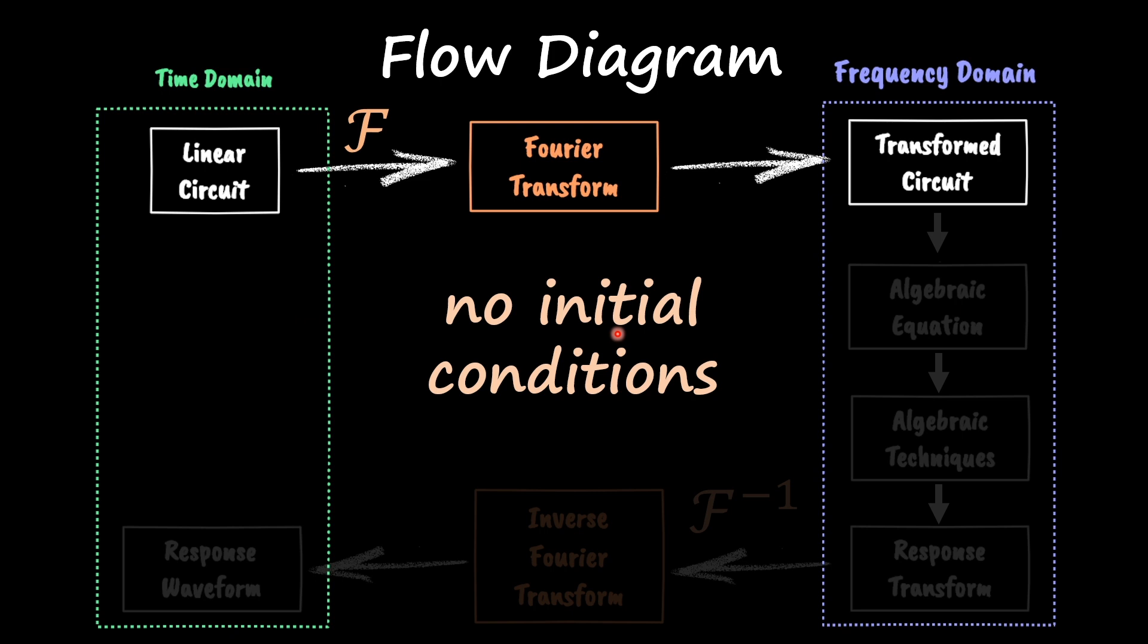With Laplace, the initial conditions were important. You can also use Laplace to study the steady state, but Fourier transform needs no initial conditions, which is going to make our life a little bit easier compared with Laplace.